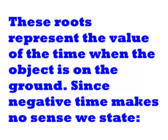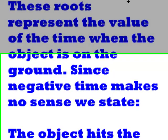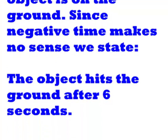These roots represent the value of the time when the object is on the ground. Since negative time makes no sense, we state that the object hits the ground after 6 seconds. It wouldn't make sense to say that the object hits the ground after -2 seconds.